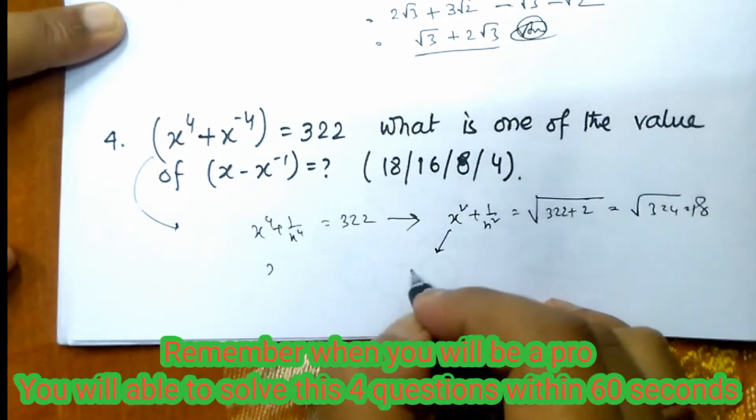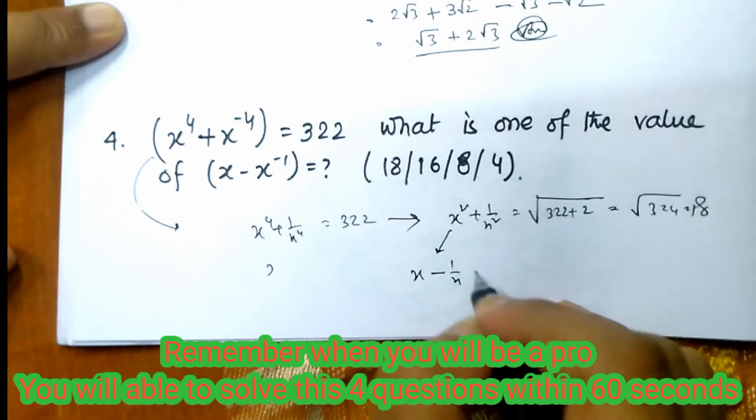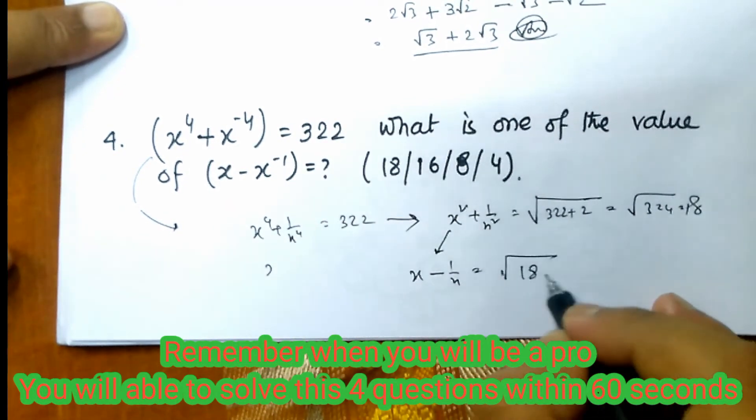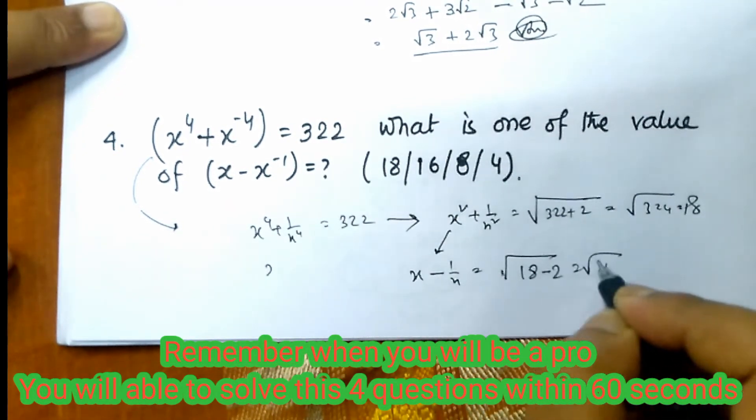And next x minus 1 by x. This is one step lower. Root 18 minus 2, root 16, equals 4.